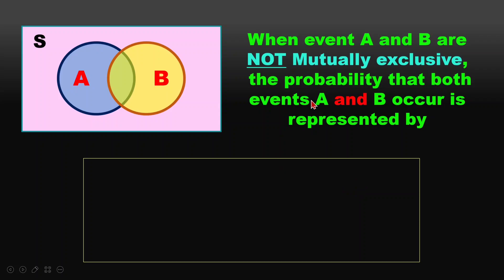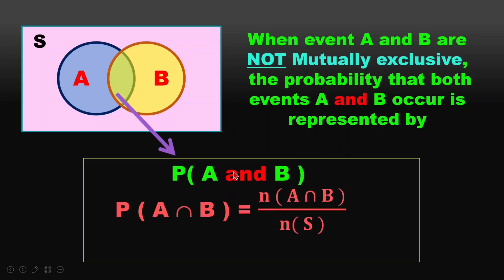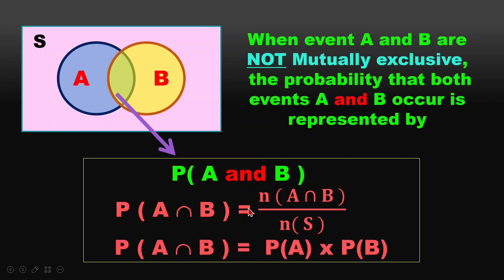So we have event A and event B. If they are not mutually exclusive and we want to find the probability of event A and event B, if you look at the Venn diagram, event A and B is actually the place where event A intersects event B — they occur together. There is a similarity, the intersection between event A and event B. The probability can be counted by taking the number of intersected values and dividing by the number of samples. Alternatively, we can also calculate this using the formula: probability of event A multiplied by the probability of event B.